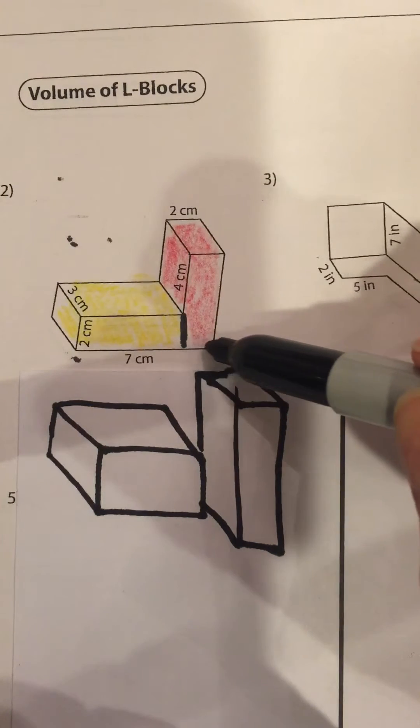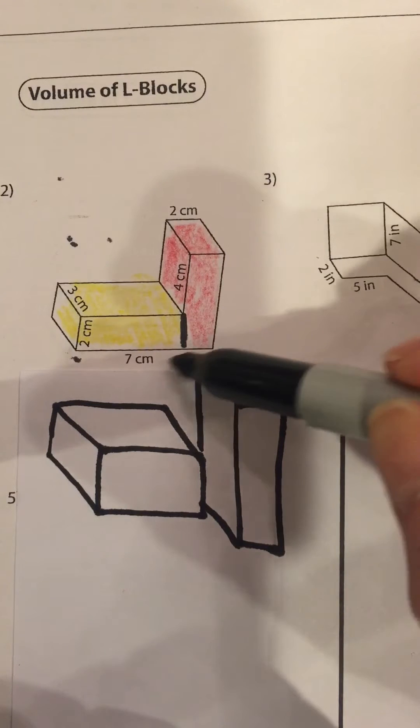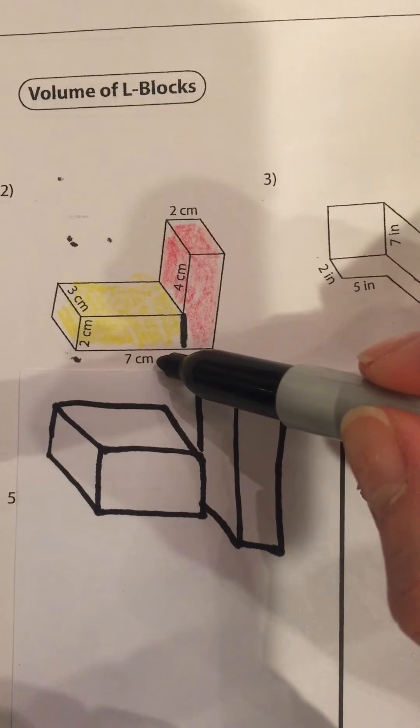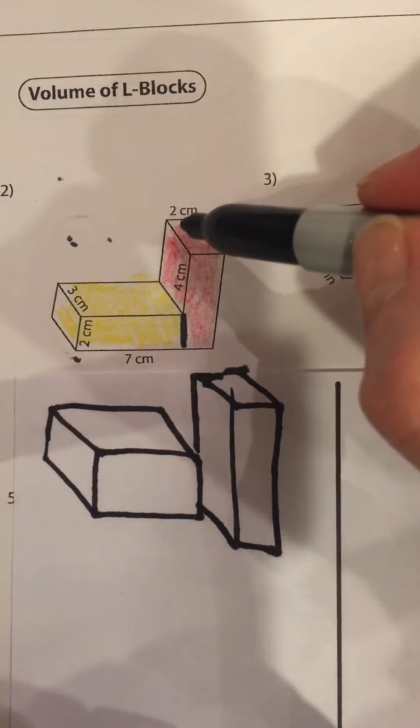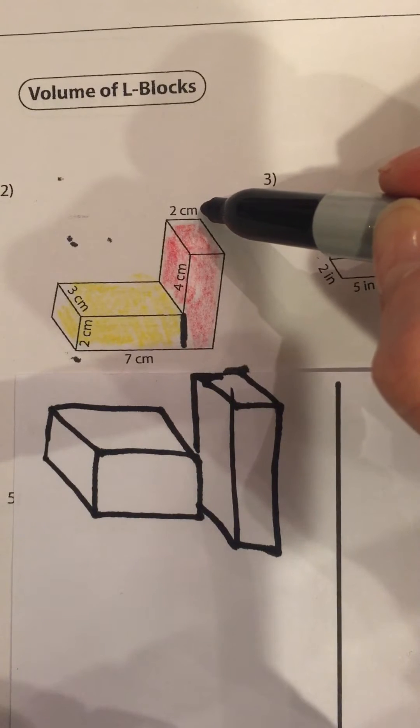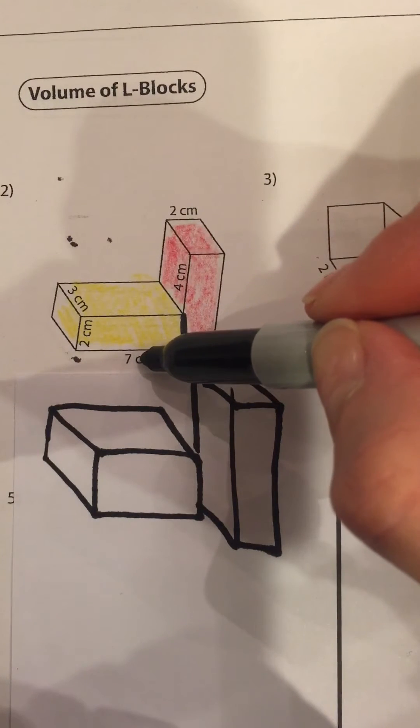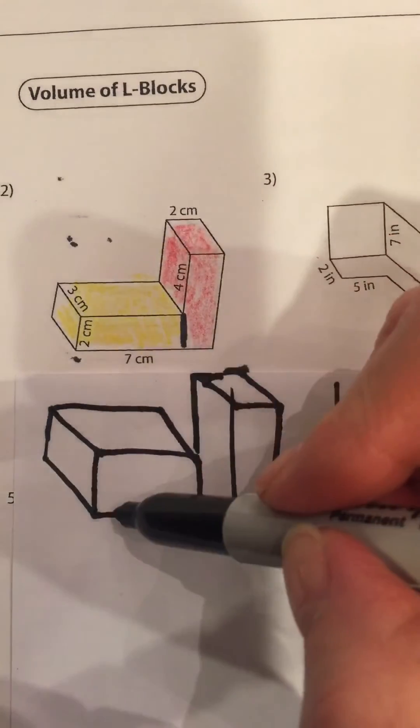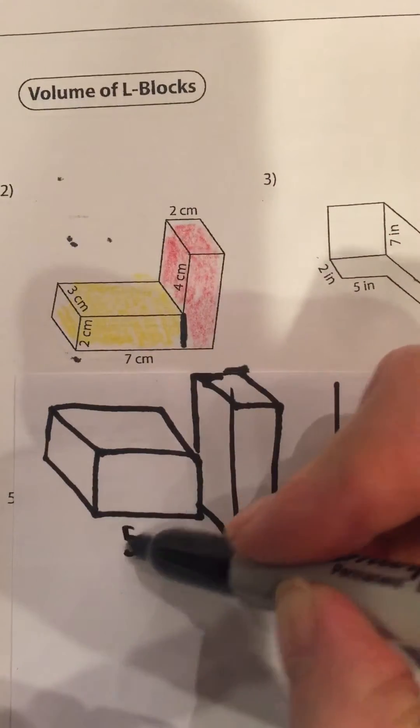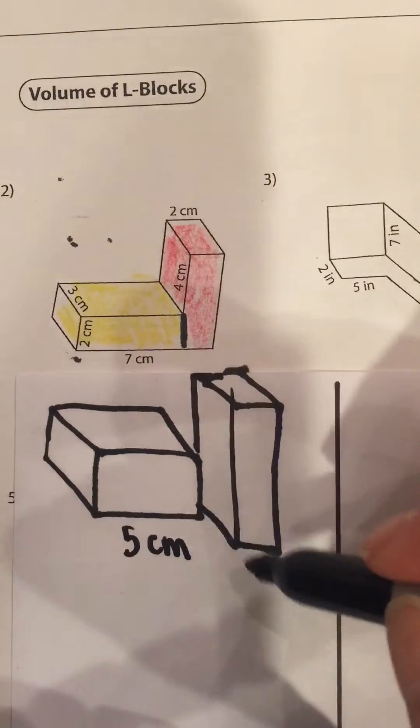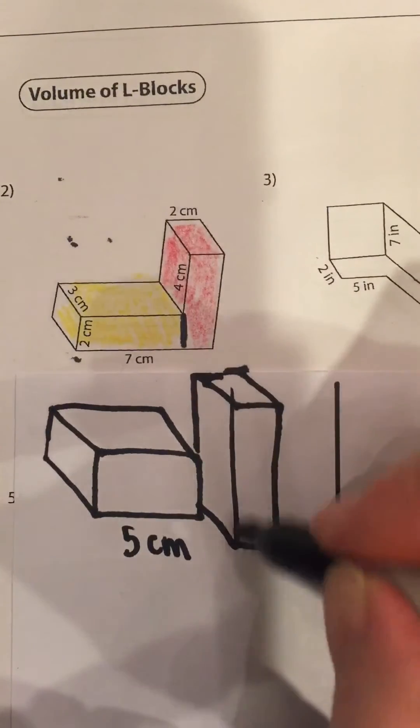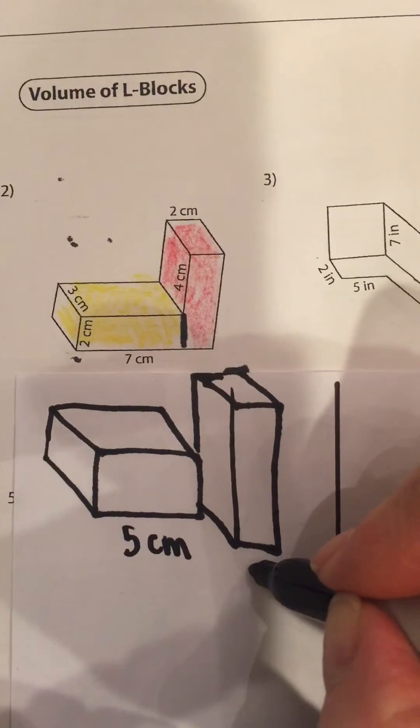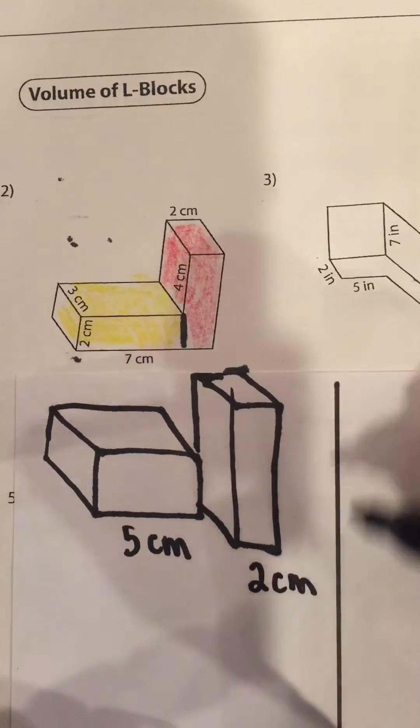Okay, let's label what we know. What we know is this whole bottom piece prior to splitting it up was seven centimeters, but we split it right here so we have to figure out how wide this piece is to subtract it from seven. And I can easily do that by looking up here, it's two centimeters. So seven take away two centimeters is five, five centimeters.